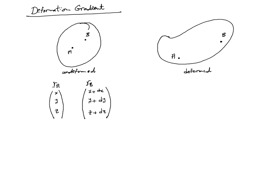Now let's see where these points go in the deformed configuration. A will go to R_A prime and B will go to R_B prime. By definition, the difference in position between the deformed and undeformed configuration is the displacement. So the displacement of point A is the vector R_A prime minus R_A. We can always express R_A prime as the original position plus displacement, and we assume the displacement components along X, Y, and Z are called U, V, and W.